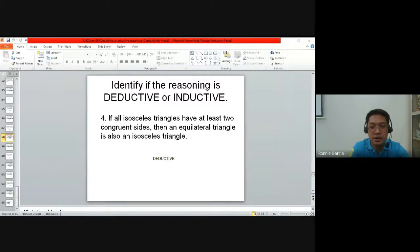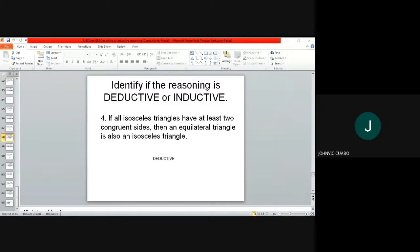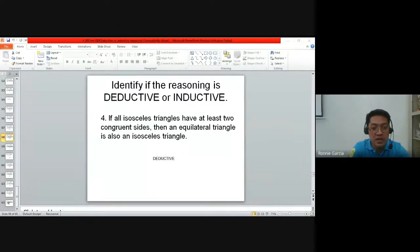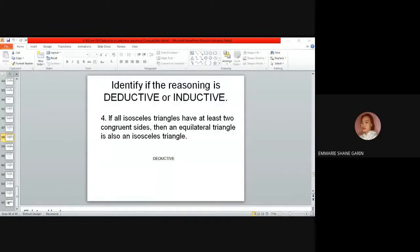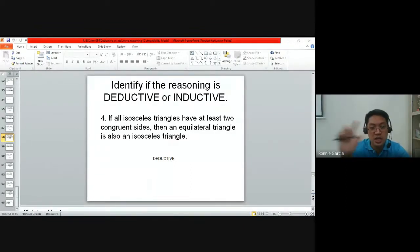Number four: If all isosceles triangles - it started with 'if all isosceles triangles,' so it's very obvious that it's deductive. It's a general statement about isosceles triangles, which have two equal sides. Then they gave an example of equilateral triangles, so that's specific. It's also an isosceles triangle, with more than two equal sides.